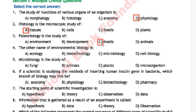MCQ number 4: the other name of environmental biology is — option A: ecology, option B: biotechnology, option C: microbiology, option D: cell biology. The correct answer is option A, ecology.